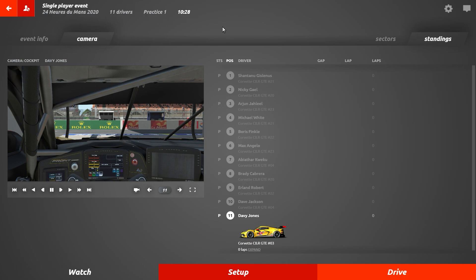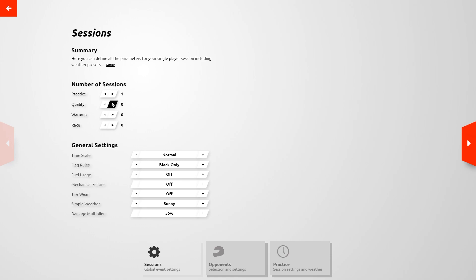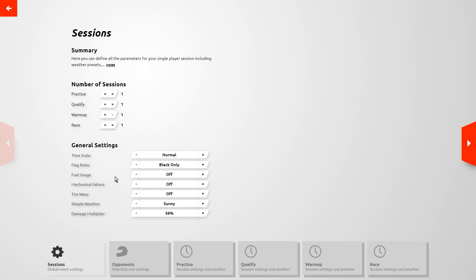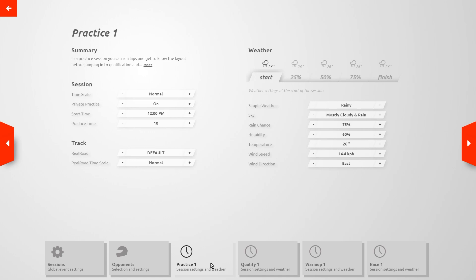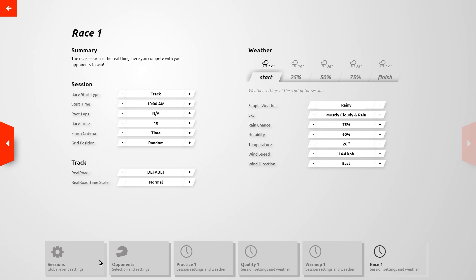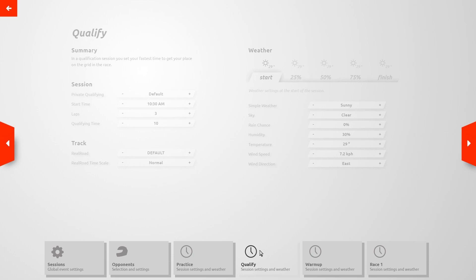As an example we'll add one of each session type and examine the setup parameters. In the settings page under general settings, Time Scale we'll look at in more detail later. Flag Rules can be full, full without disqualification, black only, or none — black only means there will be no penalties except for a black flag, and full without disqualification gives you flexibility for testing or practicing. Fuel usage and tire wear can be off, normal, or a multiplier of up to seven. Setting the simple weather type here will apply the same value to all practice, qualifying, and race sessions — conversely, changing the weather setting in any of the sessions applies that change to all sessions.